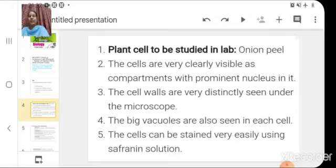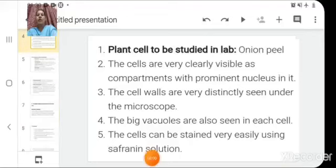Now come to the second point that is the theory. In this you will write the plant cell to be studied in lab is onion peel. The cells are very clearly visible as compartment with prominent nucleus in it. The cell walls are very distinctly seen under the microscope. The big vacuoles are also seen in each cell. The cells can be stained very easily using safranin solution.